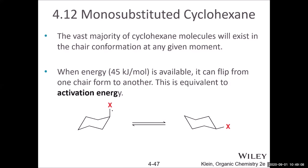After all the twisting, the molecule becomes a chair again — but with the same substituent now in the axial position where it was previously equatorial. So cyclohexane is dynamic — it dynamically keeps changing between chair conformers. Even without a substituent, cyclohexane keeps twisting from chair to chair forever. When there is a substituent like methyl, ethyl, propyl, or butyl, the substituent on the ring shows a preference for the equatorial position.